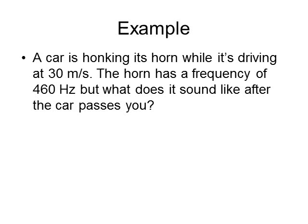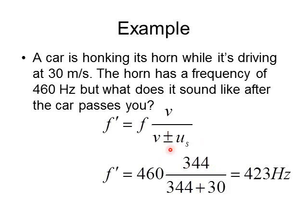In the next example, the car has just passed the observer and is now moving away. It's the same problem and same variables, but now I use plus in the denominator because the source is moving away. The observed frequency decreases to a value lower than the original 460 Hz — exactly what we'd expect after the car passes.